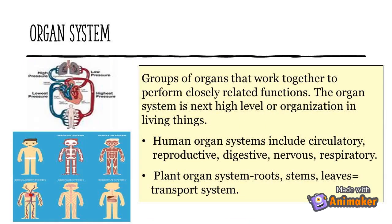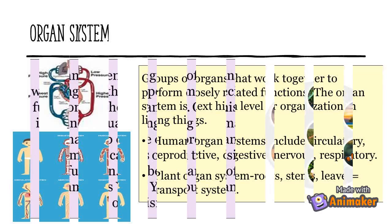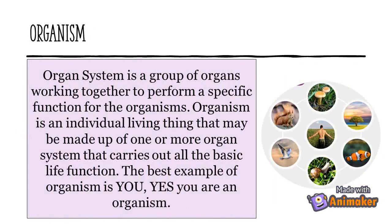Organ systems are groups of organs that work together to perform closely related functions — the next higher level of organization in living things. Human organ systems include the circulatory, reproductive, digestive, nervous, and respiratory systems. Plant organ systems include roots, stems, and leaves, considered as a transport system. An organ system is a group of organs working together to perform a specific function for the organism.